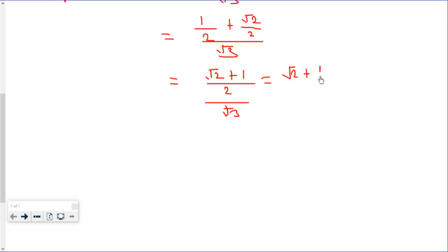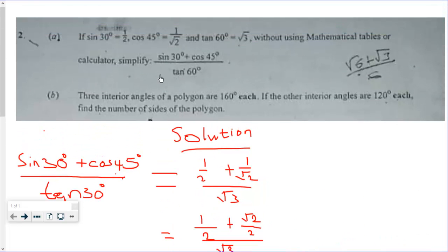Now we rationalize the denominator to get times √3 over √3. This will give us... √2 times √3 will give us √6, then √3 times √3 will give us... so √2 times √3 is √6.